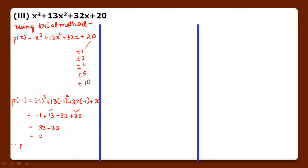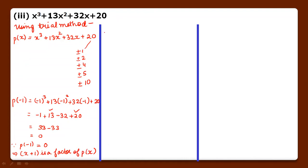minus 1 cube is minus 1, 13 into minus 1 square is plus 13, minus 32 plus 20. Looking at the positive terms: 20 plus 13 = 33. Negative: minus 1 minus 32 = minus 33. So minus 33 plus 33 equals 0. Since P(minus 1) = 0, x plus 1 is a factor of P(x). In the second step we divide by x plus 1.